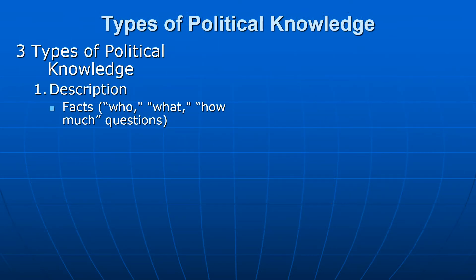Now, in the context of developing empirical political science, it's worth talking about in general the different kinds of political knowledge that exist. Not all knowledge is scientific knowledge — sometimes it's moral knowledge, conceptual knowledge, or theoretical knowledge — but here we're talking about political knowledge that is based on empirical research. It's worth acknowledging that different kinds of political knowledge and claims exist. I think there are three main types.